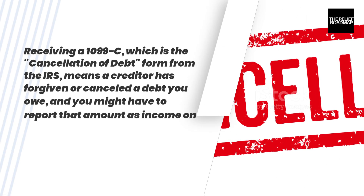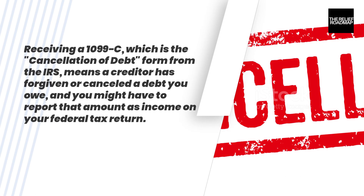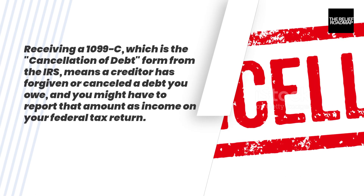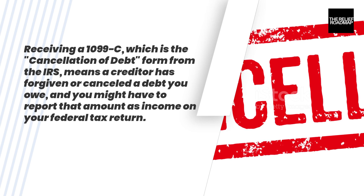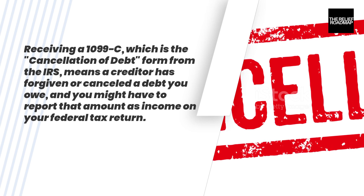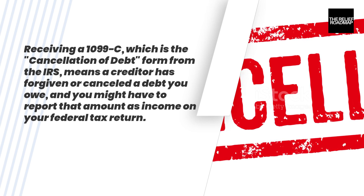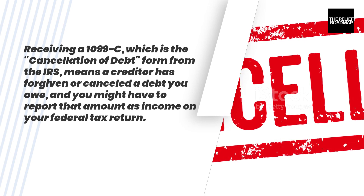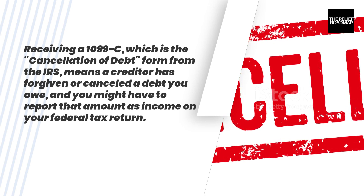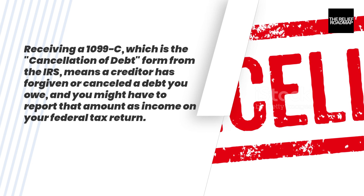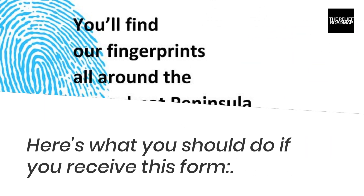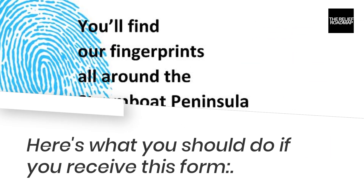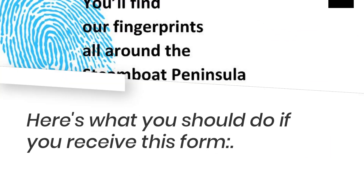Receiving a 1099-C, which is the cancellation of debt form from the IRS, means a creditor has forgiven or cancelled a debt you owe, and you might have to report that amount as income on your federal tax return. Here's what you should do if you receive this form.